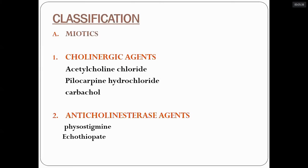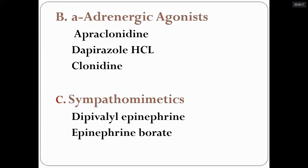Turning to the classification of drugs — the miotics, which are not mostly used nowadays though they were used more in previous days. The cholinergic agents comprise acetylcholine chloride, pilocarpine hydrochloride, and carbachol. Among cholinergic agents, we still use pilocarpine hydrochloride as a topical medication. Anti-cholinergic agents include physostigmine and echothiophate. Alpha-adrenergic agonists include clonidine and dapirazole.